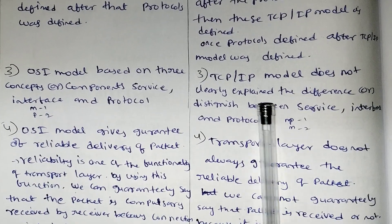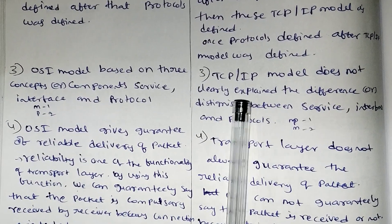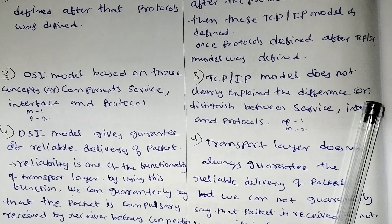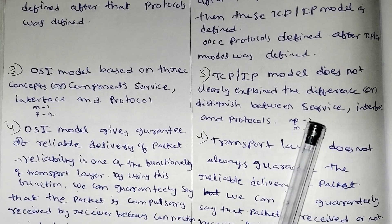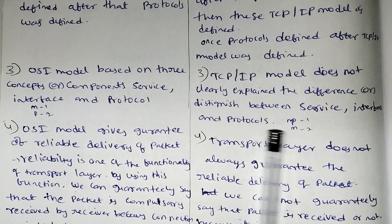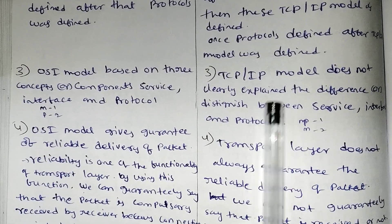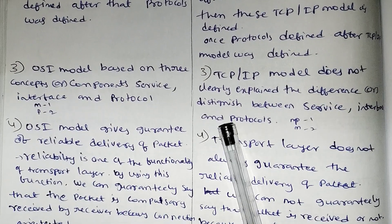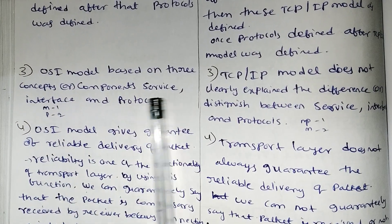TCP/IP model does not clearly explain the difference or distinguish between the components, the interface, and the protocols. Here those functions are not explained clearly, whereas the OSI model explains them clearly.